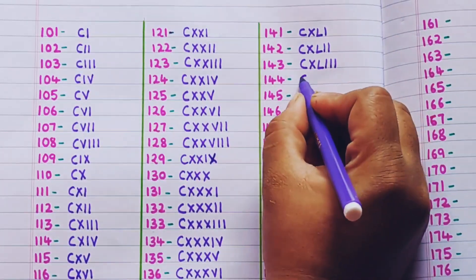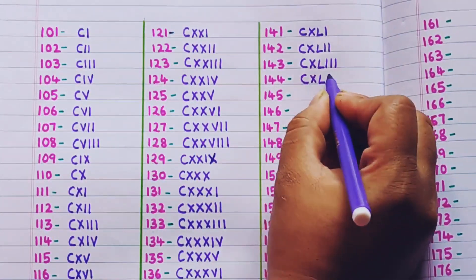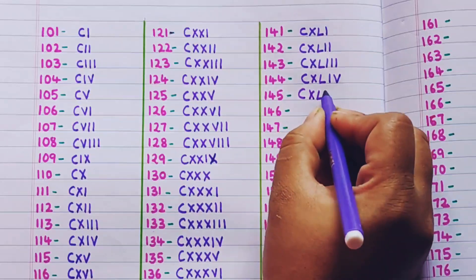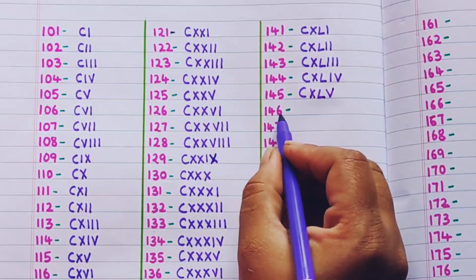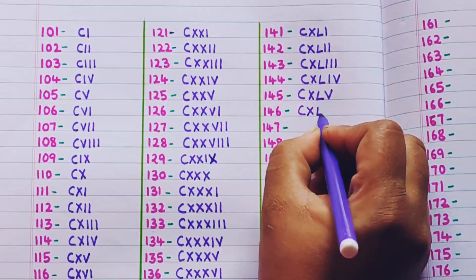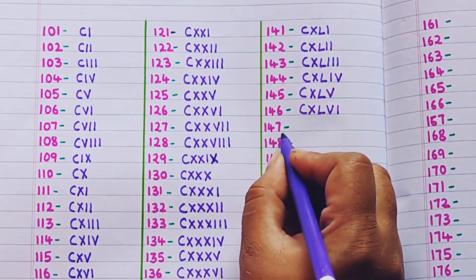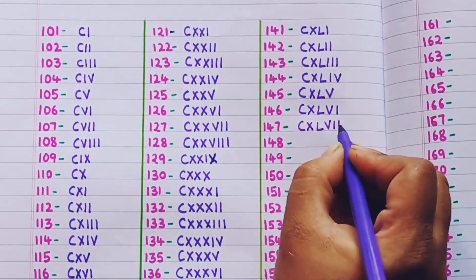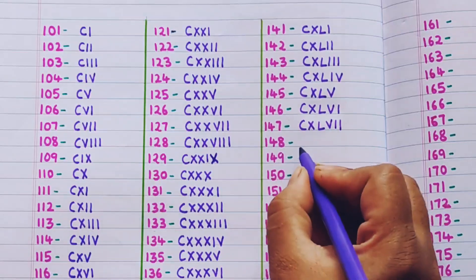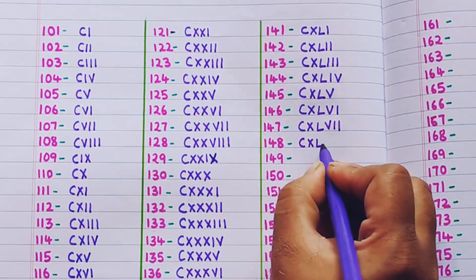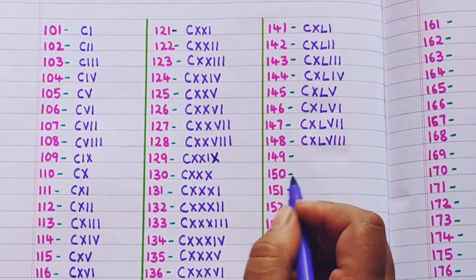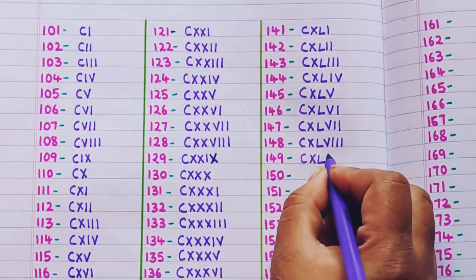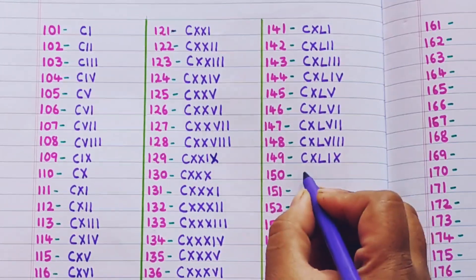144 is CXLIV, 145 is CXLV, 146 is CXLVI, 147 is CXLVII, 148 is CXLVIII, 149 is CXLIX.